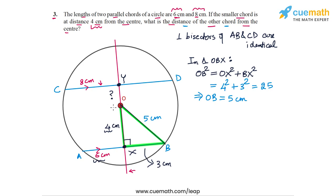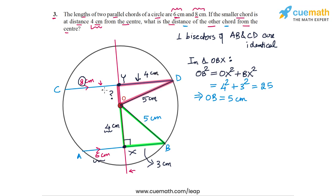Now we can join O to point D and apply the Pythagoras theorem to triangle ODY. In this triangle, we have the hypotenuse OD, which is also a radius of the circle, so OD is 5 cm. DY will be half of CD — since CD is 8 cm, DY will be 4 cm. Now we can apply the Pythagoras theorem to find the value of OY.